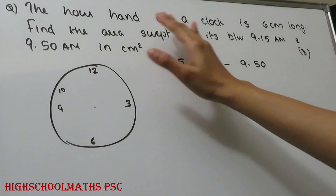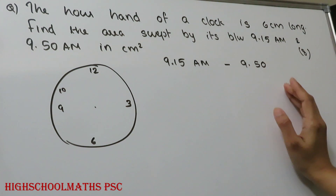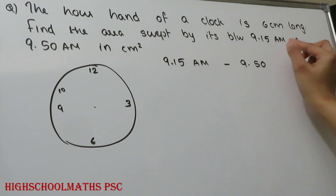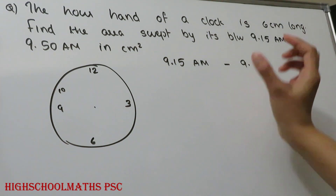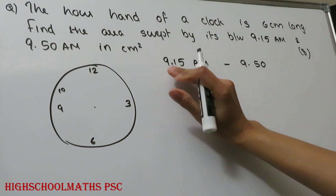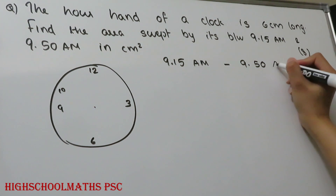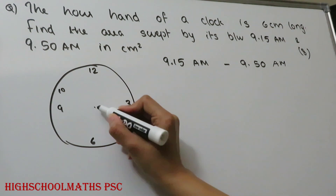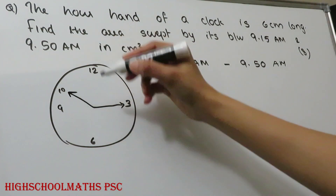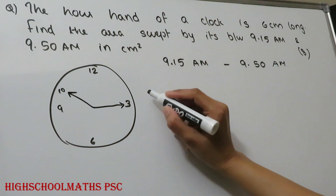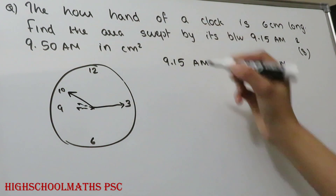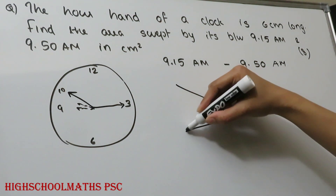We have a clock with an hour hand of length 6 cm. What we need to find is the area swept by the hour hand. The hand moves from 9:15 am to 9:50 am, and we need to calculate the area swept during that time interval.